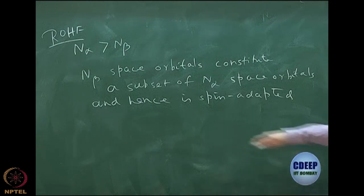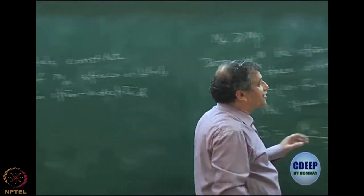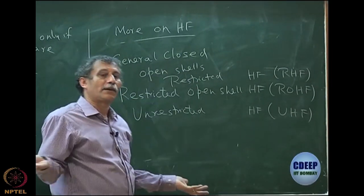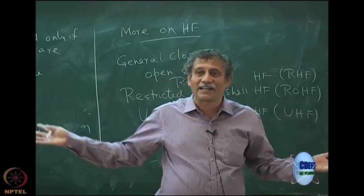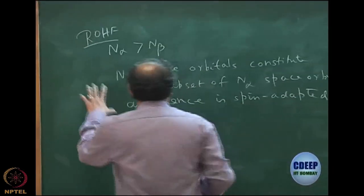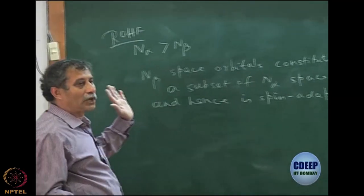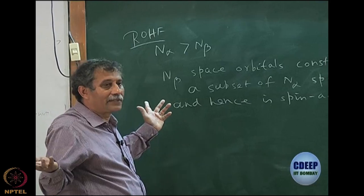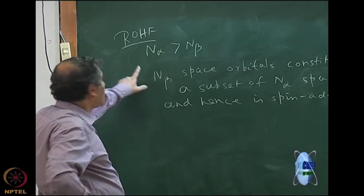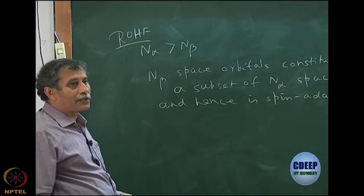ROHF subsumes RHF — RHF is a special case of ROHF, because n-alpha equal to n-beta is RHF. If you write n-alpha greater than or equal to n-beta, then RHF is a special example of ROHF. But in general, when we write ROHF we assume n-alpha and n-beta are different, with the n-beta space orbitals forming a subset of the n-alpha space orbitals.